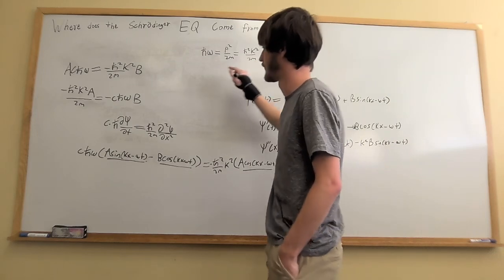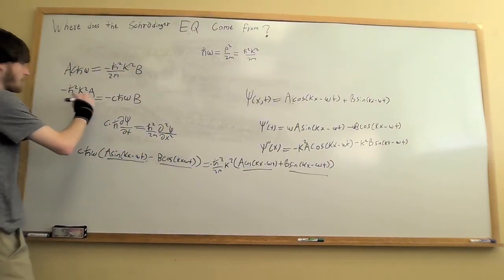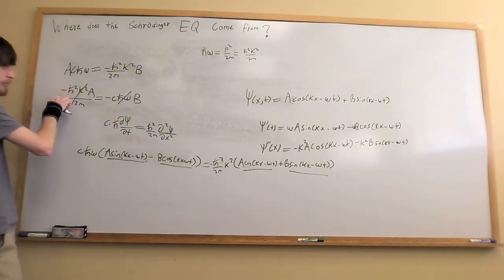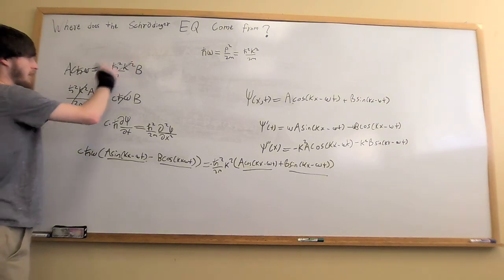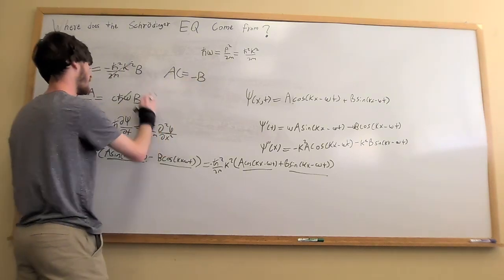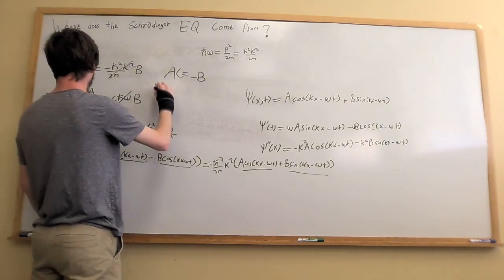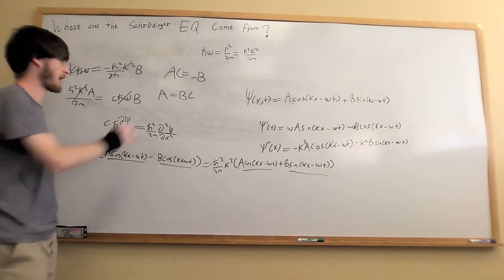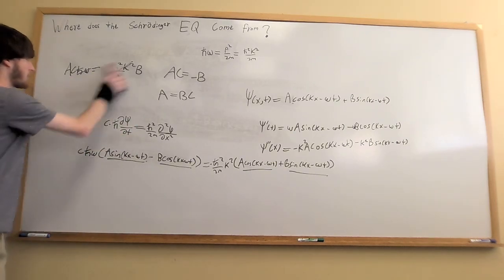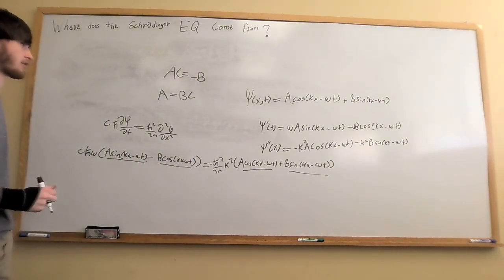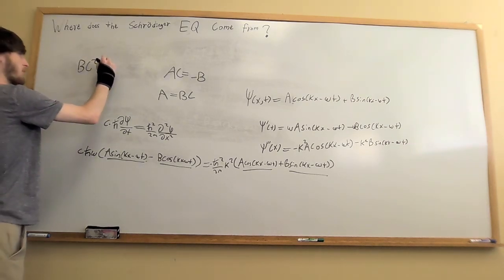So we can now substitute in. Because of this equivalence, we can completely cross out the h-bar omega and h-bar squared k squared over 2m terms, keeping the negatives. We have AC equals negative B, and A equals BC.